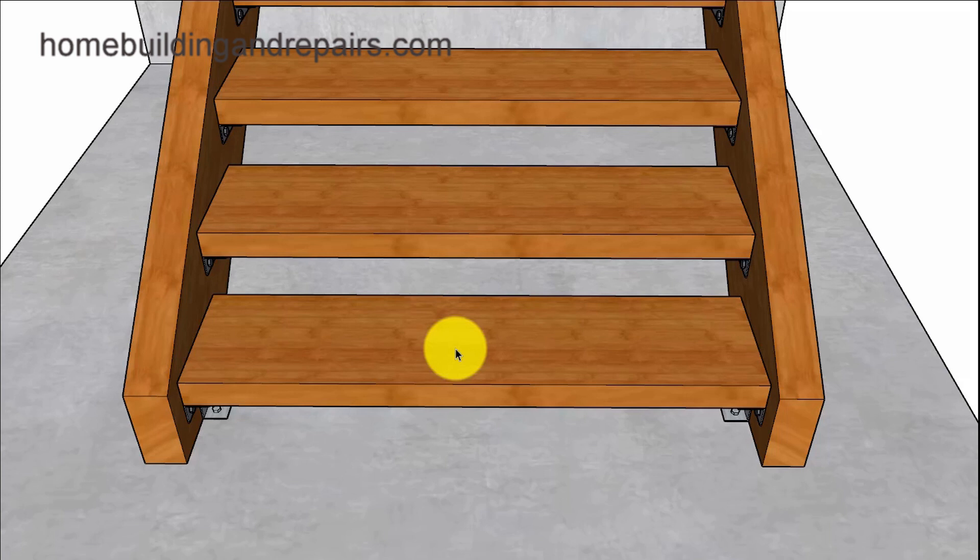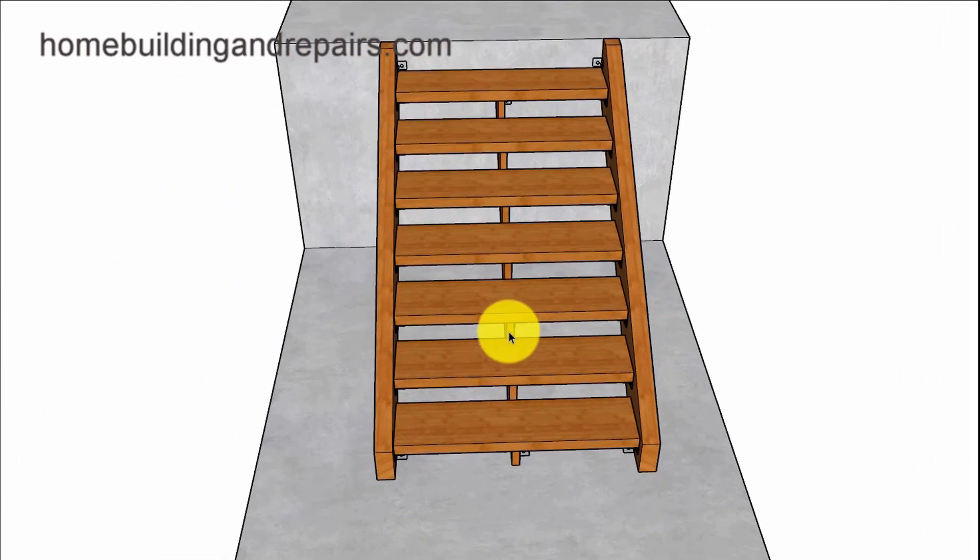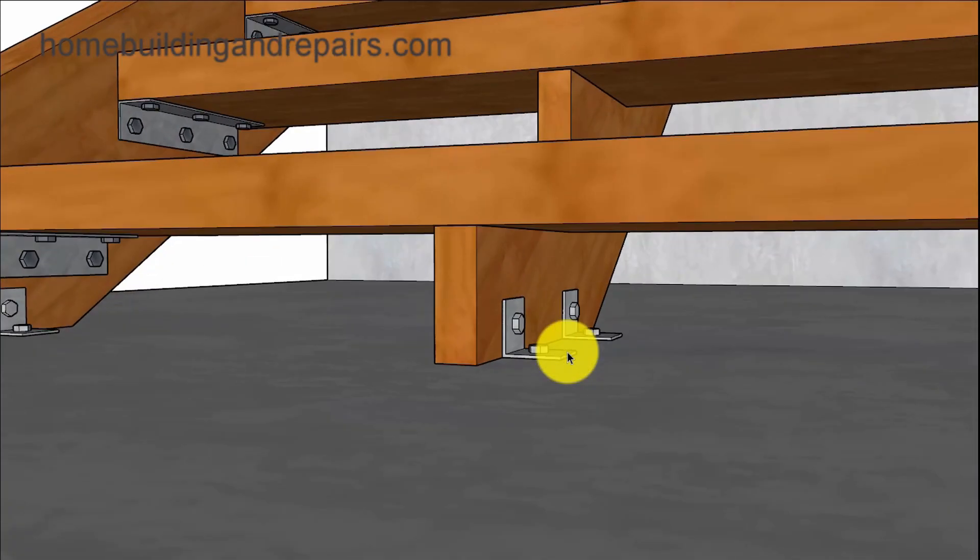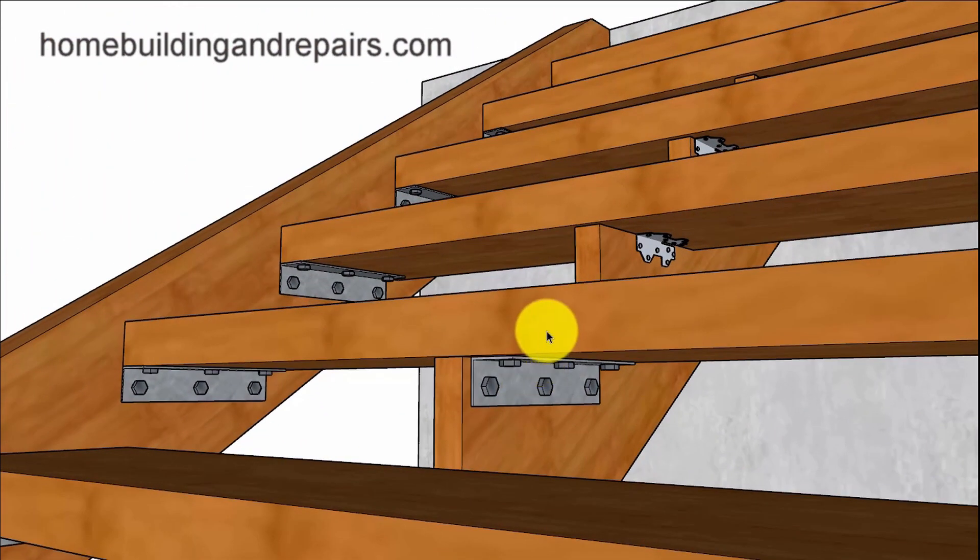Next up on the list will be to add a center stair stringer. That could be a 2x12 or even a 4x12 if needed, and you might need to use more than one of them. So let's go ahead and take a look at how we can attach the stringer to the floor - concrete floor, wood floor - and how we can attach the treads to the stringer.